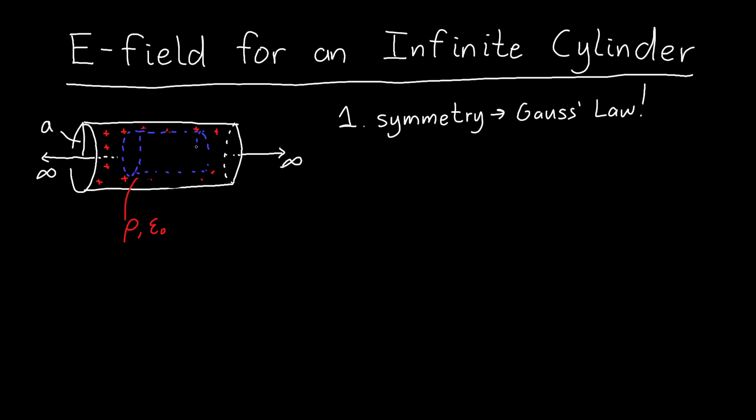So let's say that this has some radius little r, and little r for now is going to be less than the radius of my cylinder a.